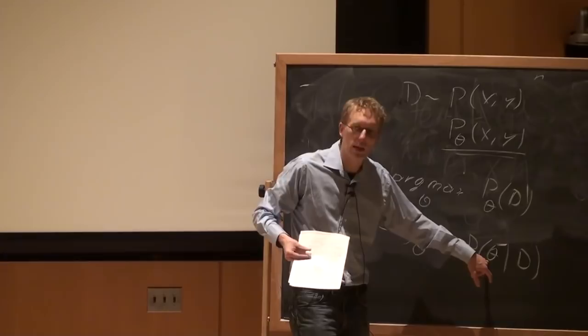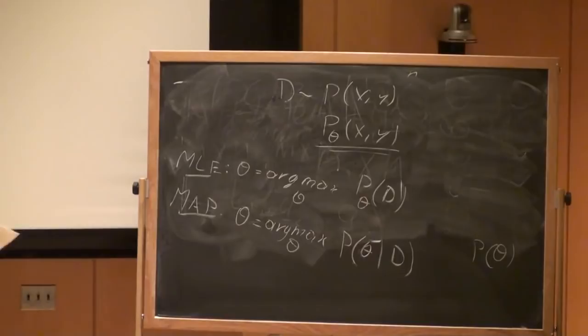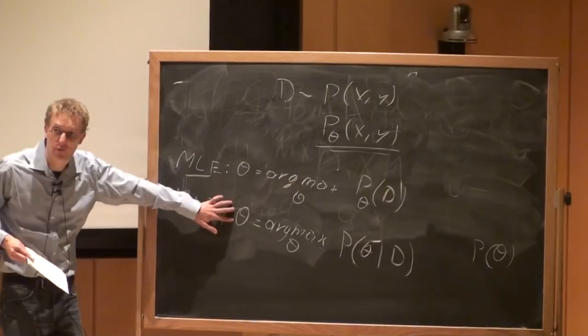The distribution over theta is the prior distribution. To do MAP we have to have some prior distribution p(theta) that we define. Finally, the truly Bayesian approach asks: why are we estimating theta at all? Because ultimately we want to make predictions.